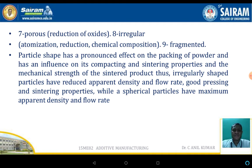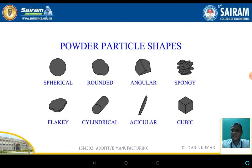Particle shape has a pronounced effect on the packing of the powder and influences its compacting, sintering properties, and the mechanical strength of the component. The shapes of powdered particles include spherical, rounded, angular, spongy, flaky, cylindrical, acicular, and cubic. This slide shows the same particle shapes discussed previously, now illustrated with corresponding images.